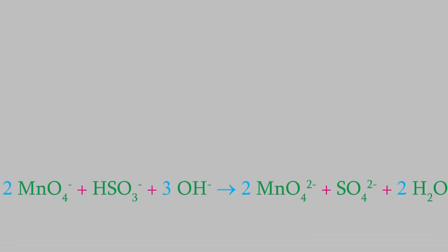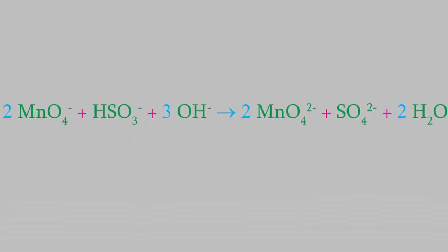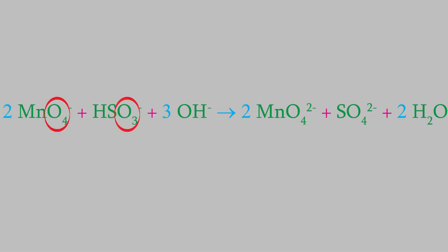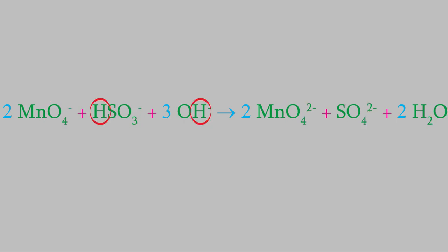The last thing we can do is check to be sure that the charges and the elements balance. On the left, the ions have charges that add up to minus 6, and that's also what we have on the right. As far as the elements, we have 2 manganese atoms on both sides. For the oxygens, there are 8 from the permanganate, 3 from the bisulfite, and 3 from the hydroxide, for a total of 14 oxygens on the left. On the right, there are 8 from the manganate ions, 4 from the sulfate, and 2 from the water molecules, which gives us 14 overall on the right. There's also a total of 4 hydrogens on the left side and 4 on the right, and there's 1 sulfur on each side.